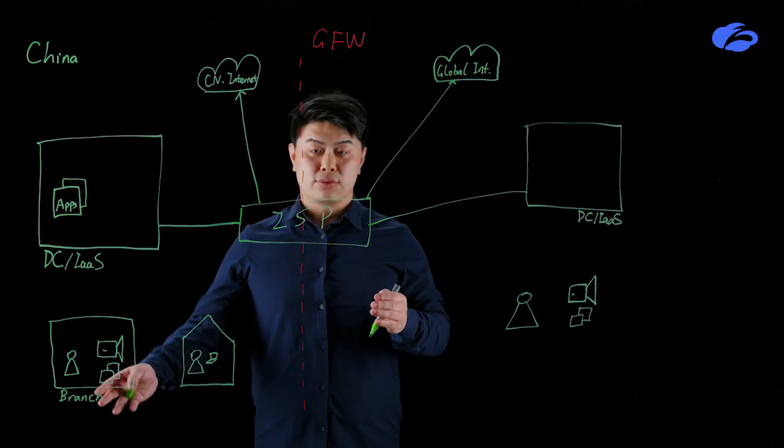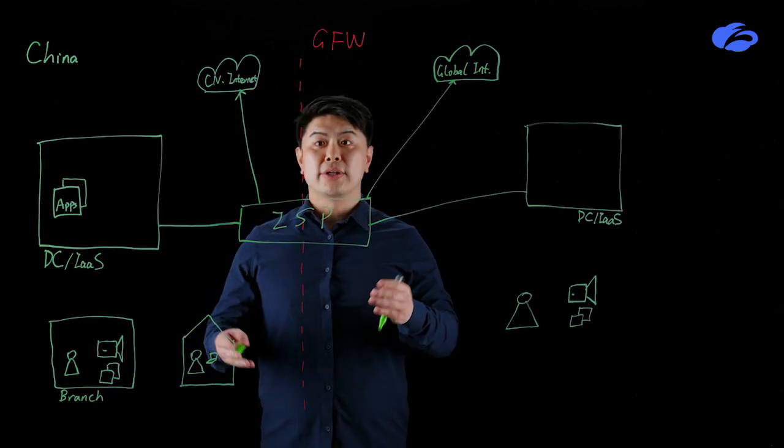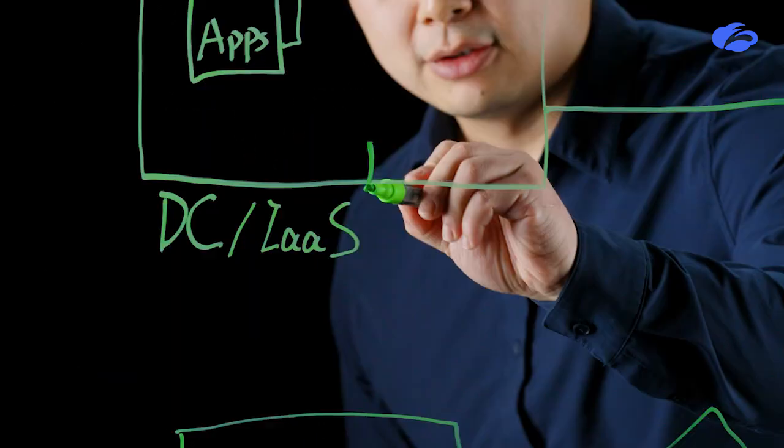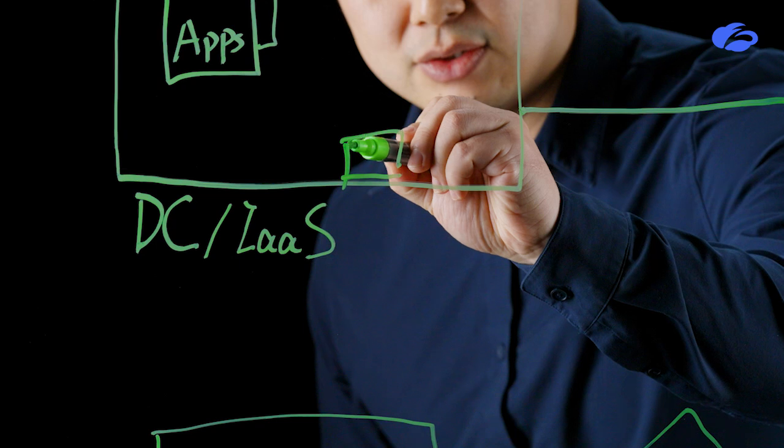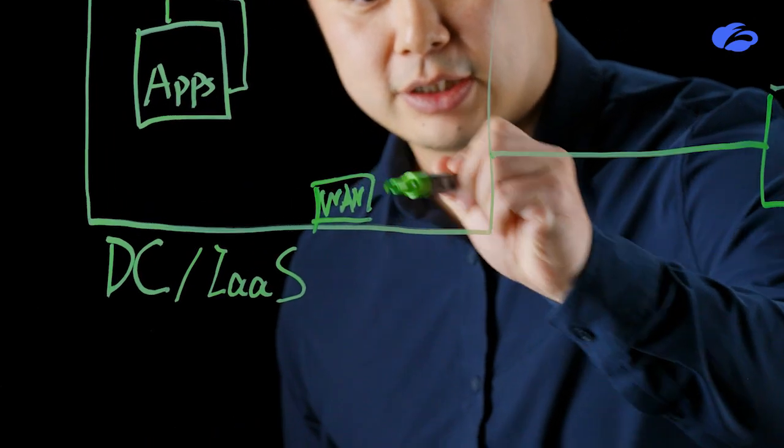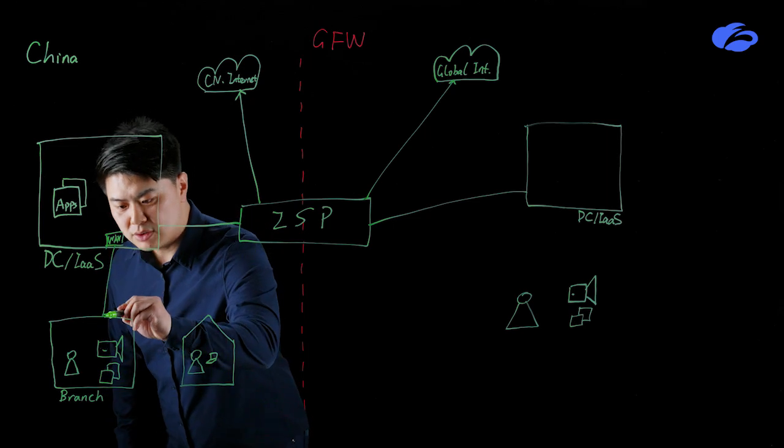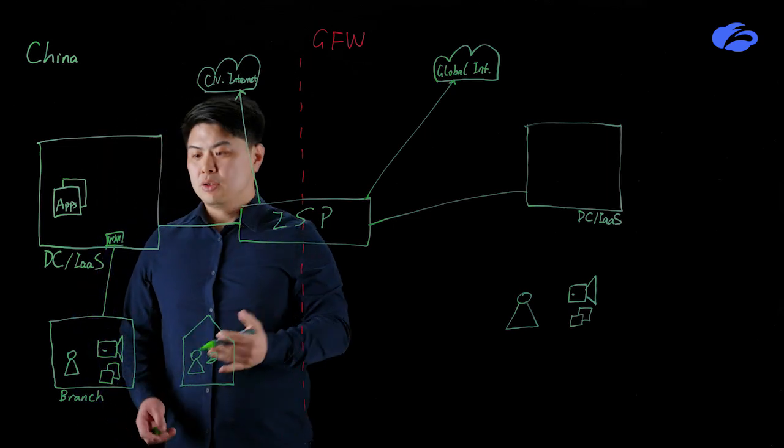For the users at branches or users at home, how are they going to consume that? Normally, for the users in the locations, they will start a VAN connection, sometimes SD-WAN, sometimes just the private domestic links towards the data center.